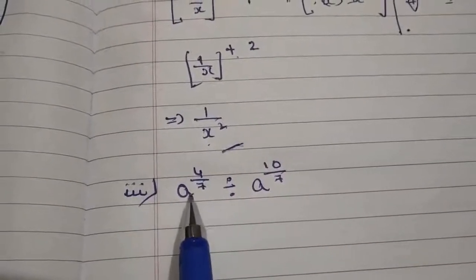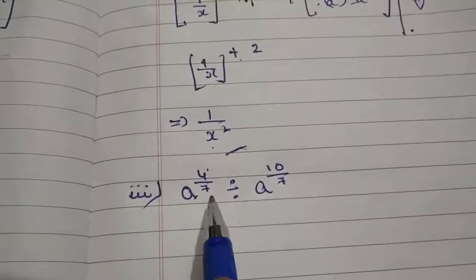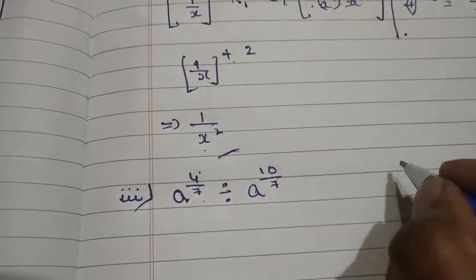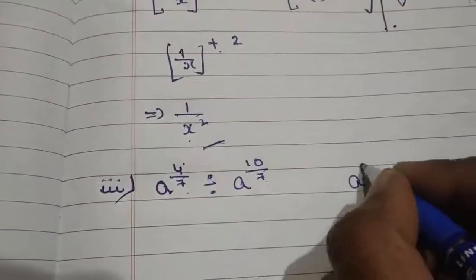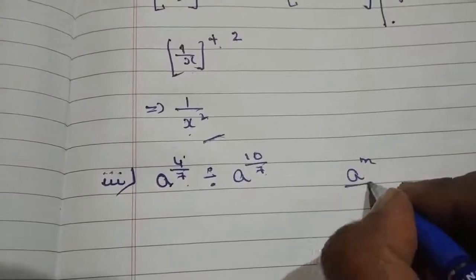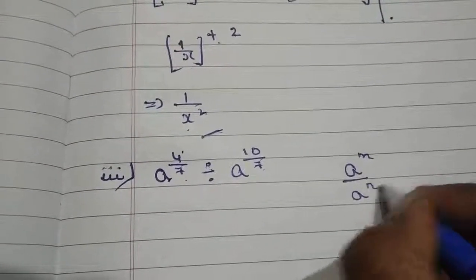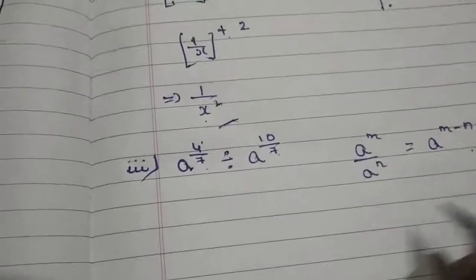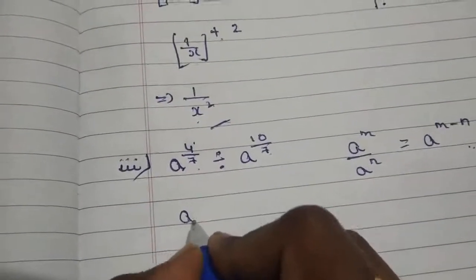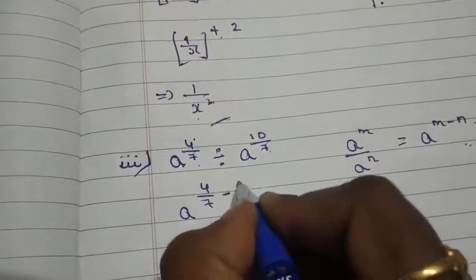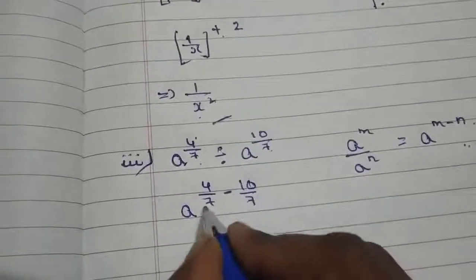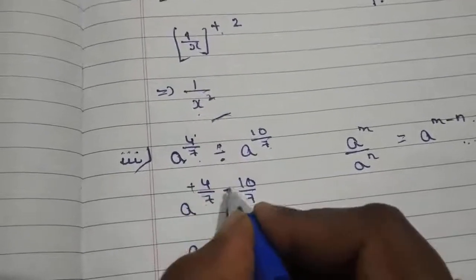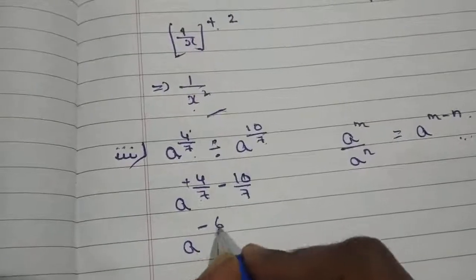Third question: a to the power of 4 by 7 divided by a to the power of 10 by 7. Here we directly apply the law of exponents: a to the power of m divided by a to the power of n equals a to the power of m minus n. This gives a to the power of 4 by 7 minus 10 by 7. Since the denominators are the same, we simplify the numerators: 4 minus 10 is minus 6 by 7.